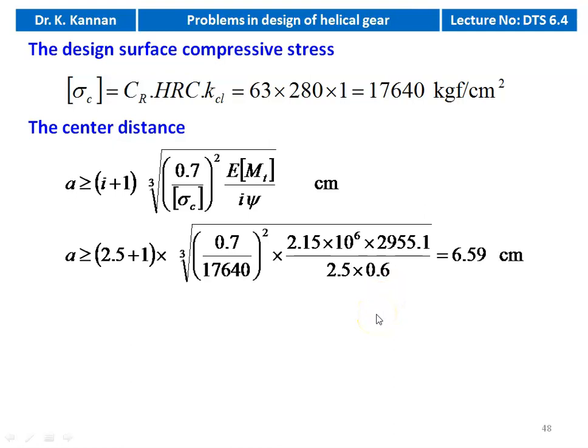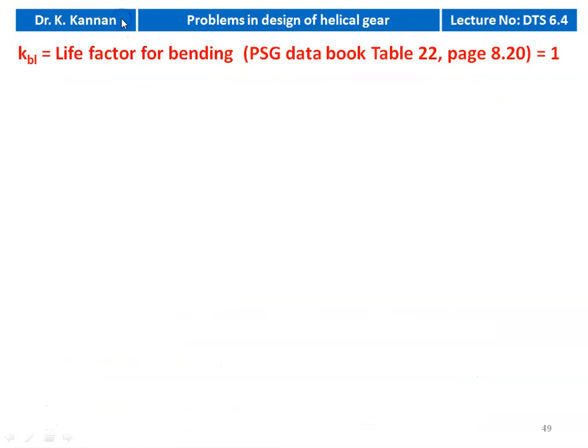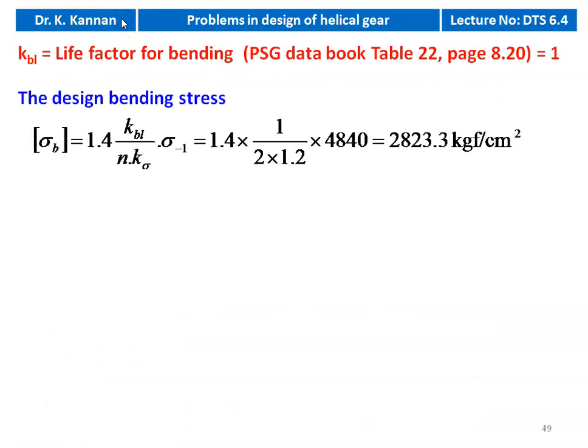From page 8.19, stress concentration factor K_sigma = 1.2, factor of safety N = 2 from table number 20. Endurance limit sigma_{-1} = 0.35 × sigma_u + 1200 = 0.35 × 10,400 + 1200 = 4,840 kgf/cm². Life factor for bending KBL = 1. Design bending stress sigma_b = (1.4 × KBL)/(N × K_sigma) × sigma_{-1} = (1.4 × 1)/(2 × 1.2) × 4840 = 2823.3 kgf/cm².